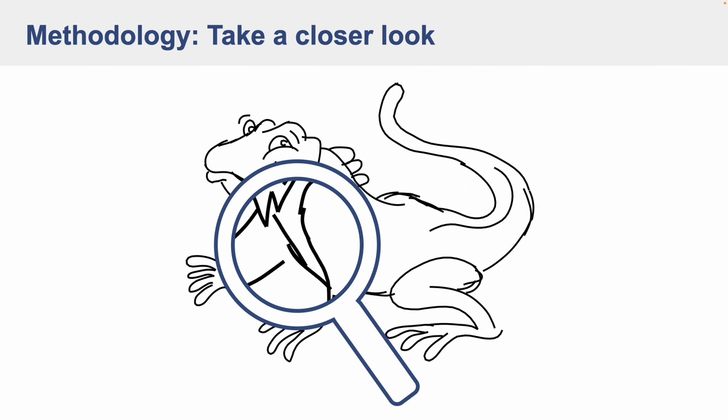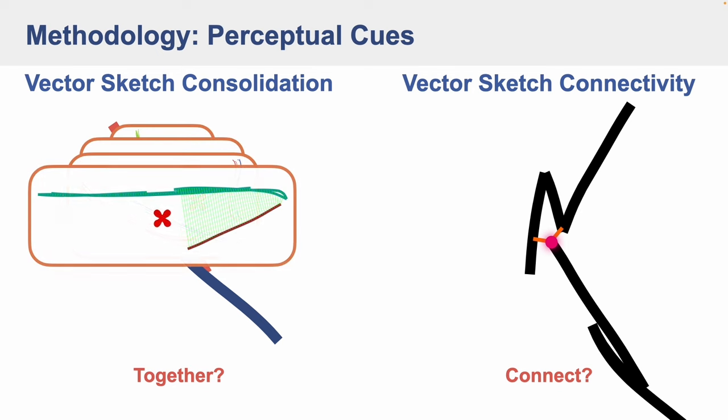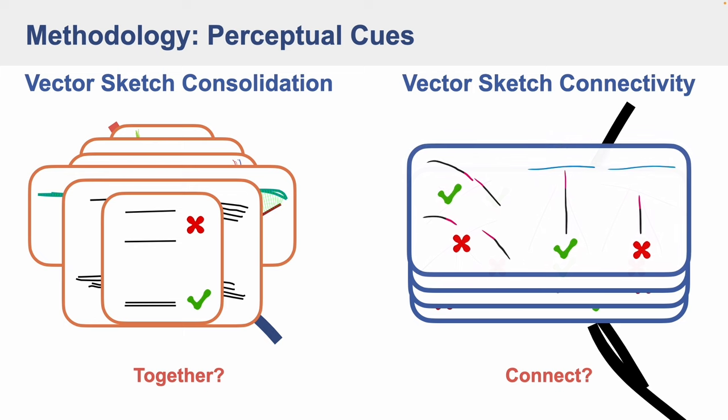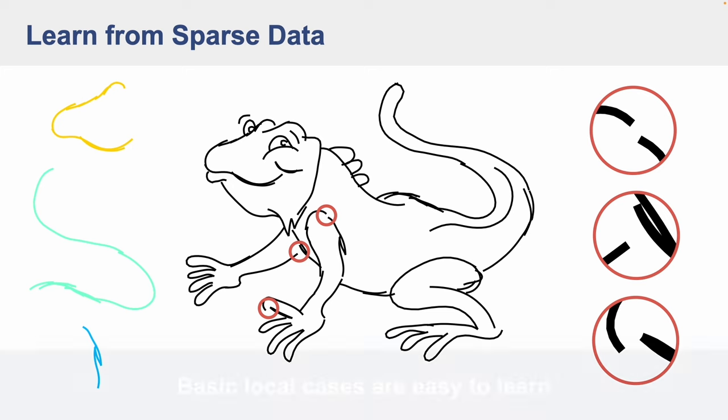And break down the problem into smaller and simpler local decisions. We find inspirations from perception studies and measure perceptual cues in the local level. In this way, we are able to generate multiple training examples even from a single annotated sketch and to reliably learn these basic cues.